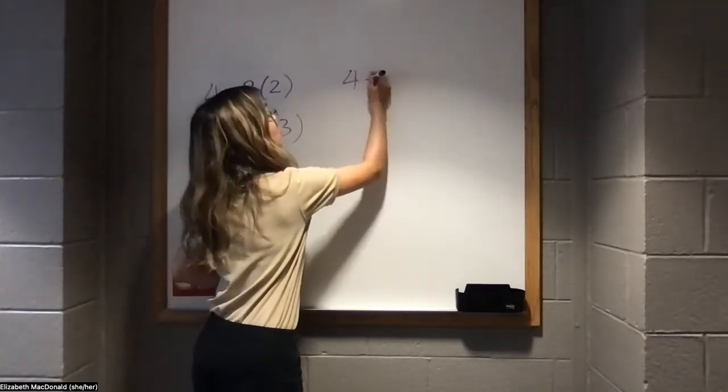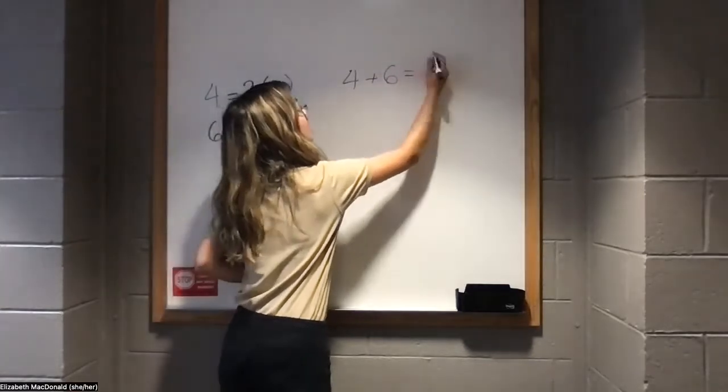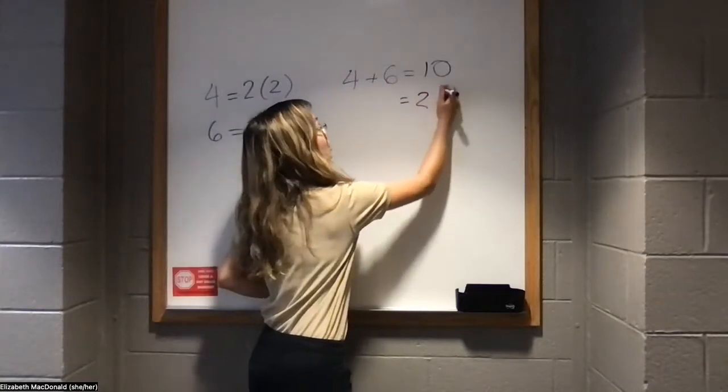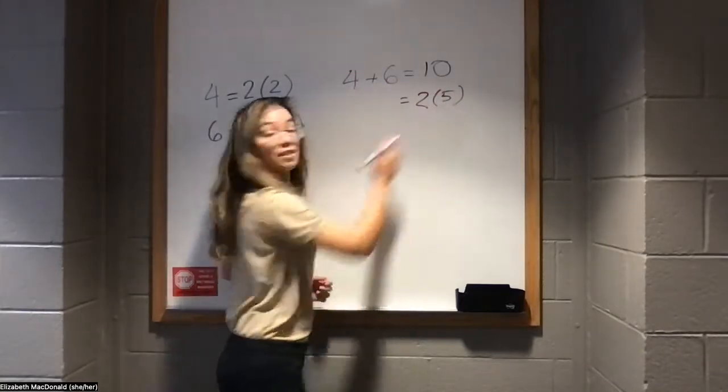When we add 4 and 6 together, we get 10, which can also be rewritten as 2 times some other number, in this case 5.